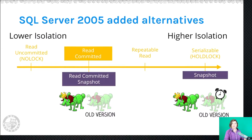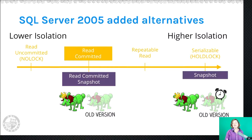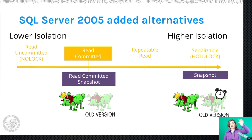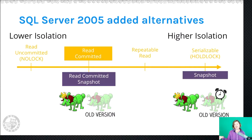Anyone whose read is happening and whose transaction start time means they should get the old version of the data can see it from tempdb. If the current row is being locked during the update, they don't have to wait for that lock to be released — the reader doesn't get blocked by the writer. With Read Committed Snapshot, this is implemented at a statement level, so each statement in a transaction sees data consistent with when that statement started.